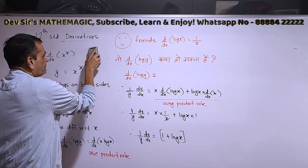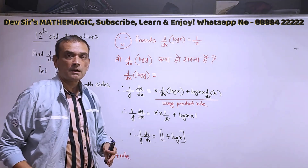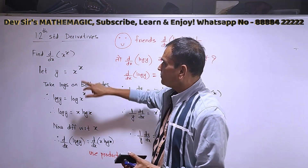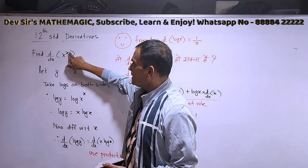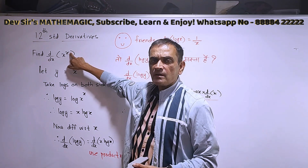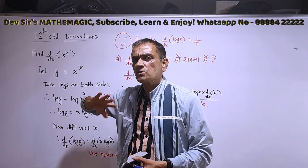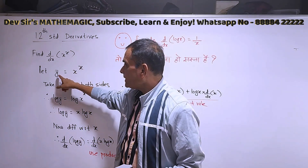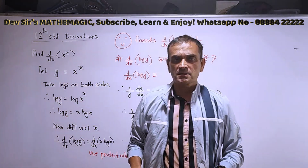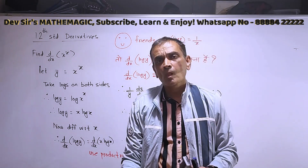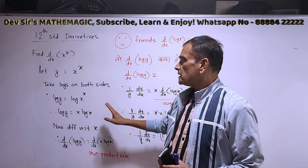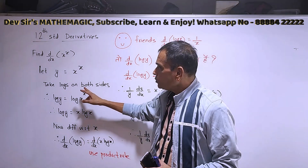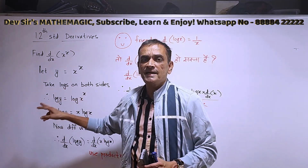Whenever we get a function like x raised to x, or x raised to sin x, both the base and the exponent are functions of x. In such cases, first of all, we call it as y is equal to x raised to x. Don't differentiate right now — you have to take logs on both sides.